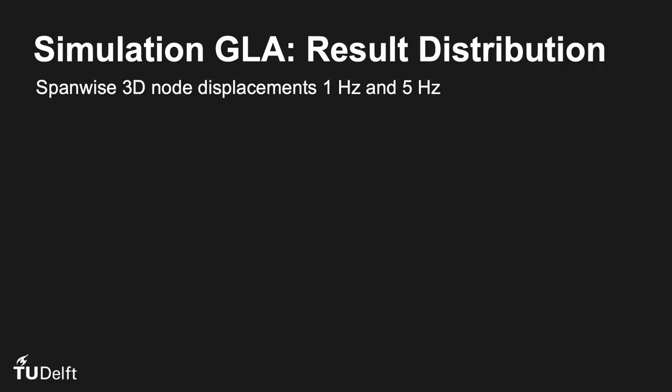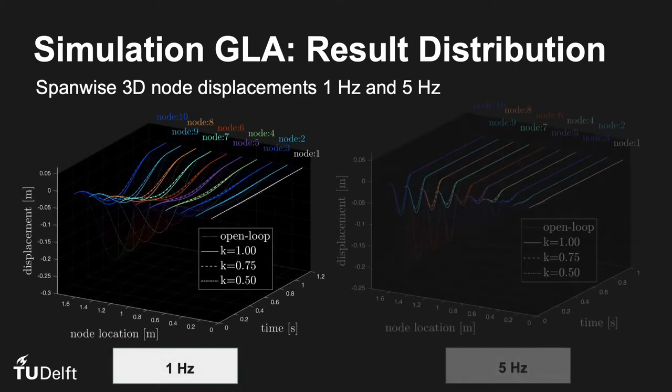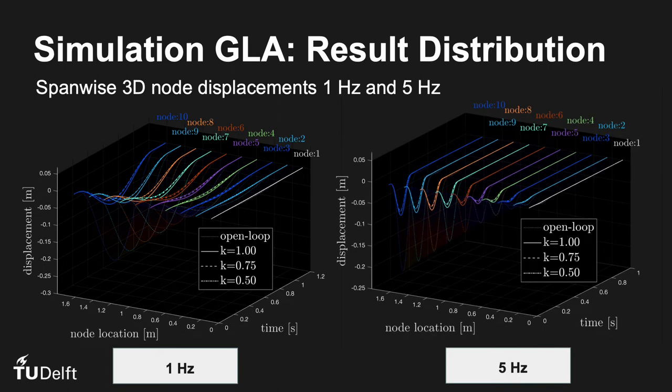Let us look at the nodal displacements along the span. In these 3D plots, the x-axis is the span and the y-axis is the time. Z are the nodal displacements in meters. The same observation is made that the lower scaling has suppressed the deflections most effectively. We also see that the tip exhibits higher amplitude, as expected.